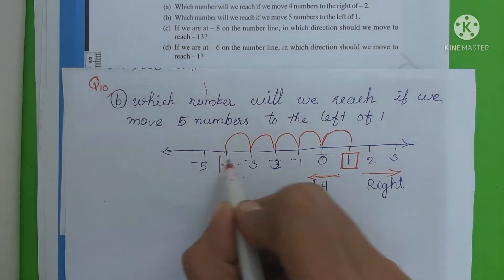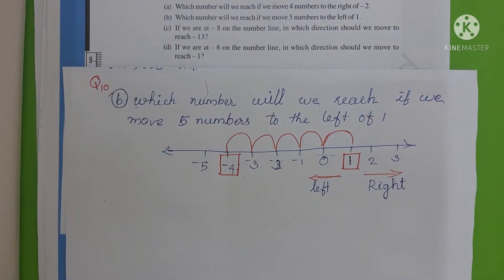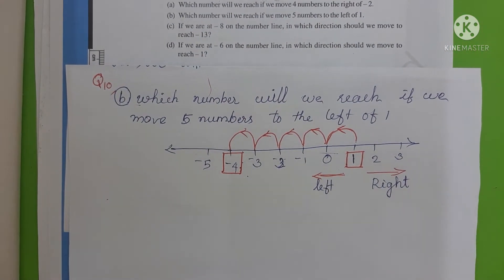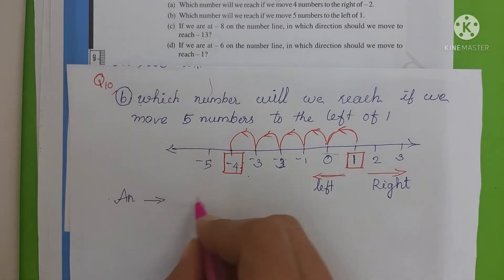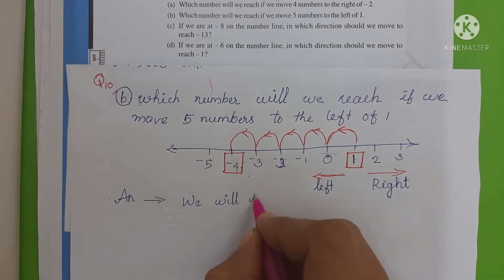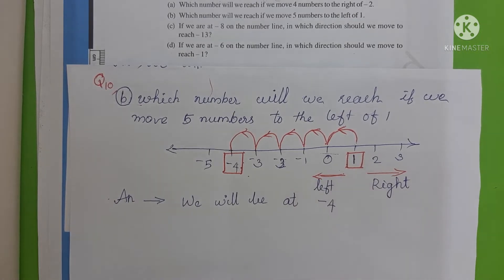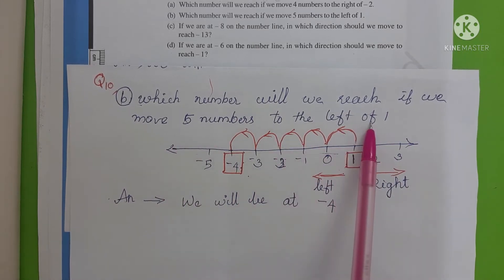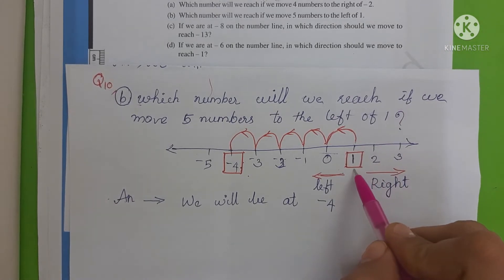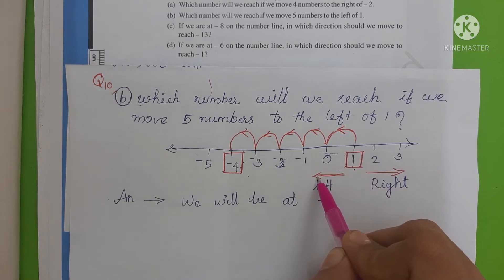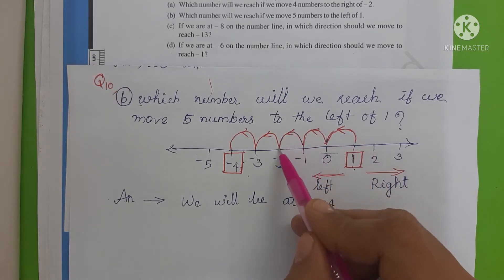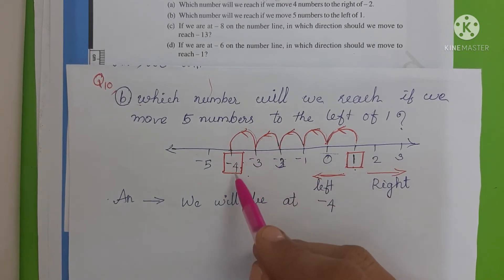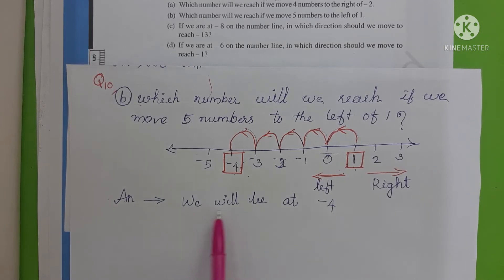We will reach minus 4. The answer will be at minus 4. So the question asks us to move 5 numbers to the left of 1, starting from 1 and moving left. We move 5 numbers and reach minus 4. The answer is minus 4. That is the answer for part B.